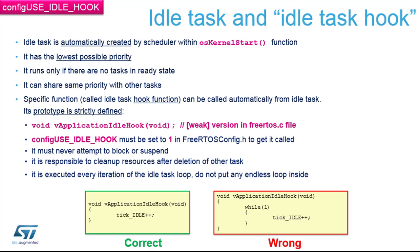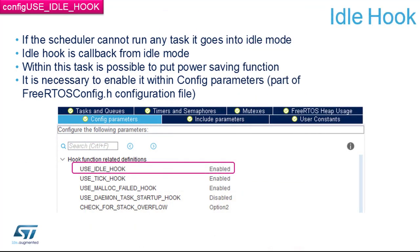To use the idle hook, you can enable it in the hooks list under the config parameters tab for FreeRTOS. The advantage of the idle hook is that within this callback you can enter a low power mode. When the microcontroller has nothing else to do, it will typically be awakened by a system timer, external interrupts, a real-time clock, or communications.